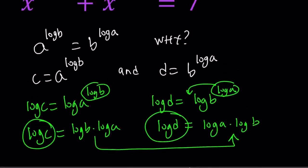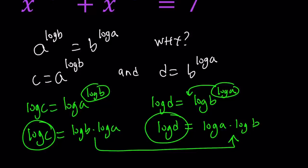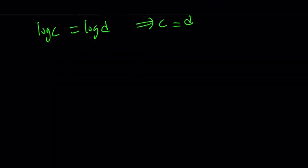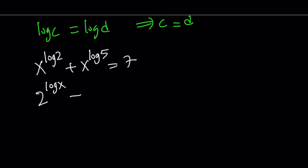and that implies c equals d, because the log function is one to one. So that proves that a to the power log b and b to the power log a are the same thing. We can just switch them around. How does that help us in our equation? We have x to the power log 2 plus x to the power log 5 equals 7.